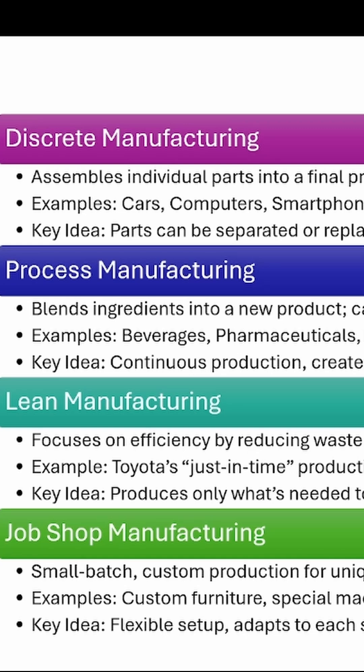Job shop manufacturing is usually small batch production. It's all about flexibility — you are not making the same thing over and over again. Instead, each order might require different materials, different processes, and different setups.